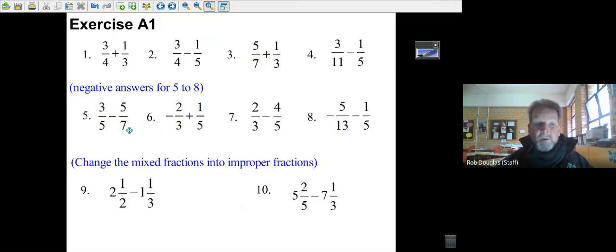You still get the common denominator the same way, but when you calculate seven times three minus five times five, you won't get a positive answer.